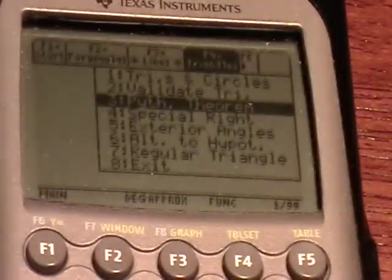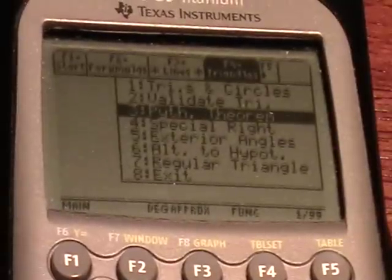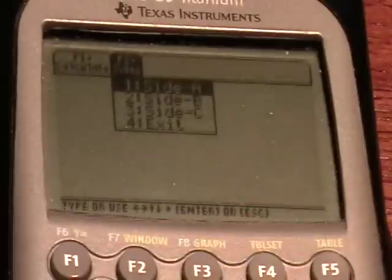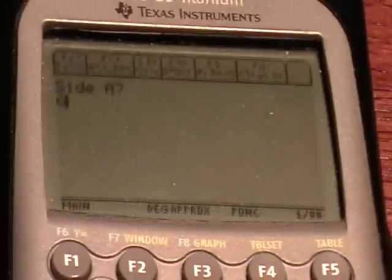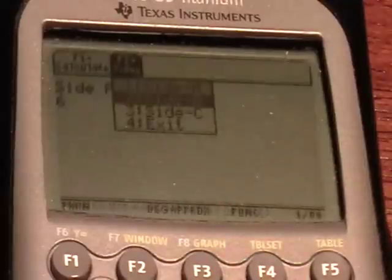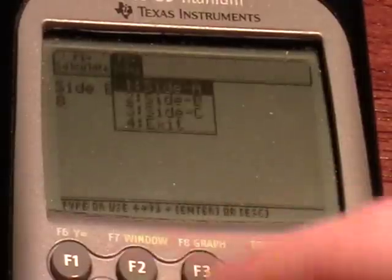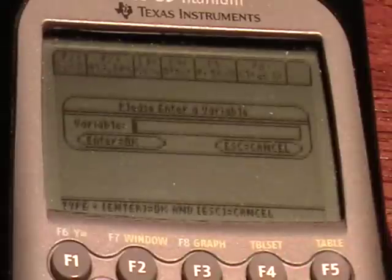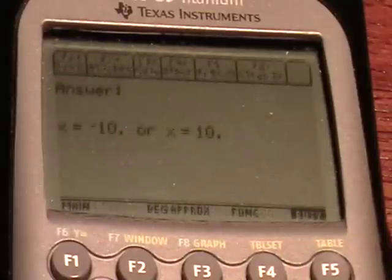First thing I want to do is pull up the Pythagorean theorem function under the triangles tab and start entering values. We have 6 for side A, 8 for side B, and side C, our hypotenuse, is unknown. We'll solve for that. We get an answer of 10.